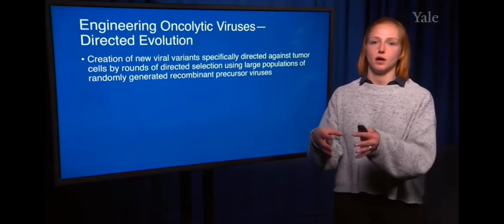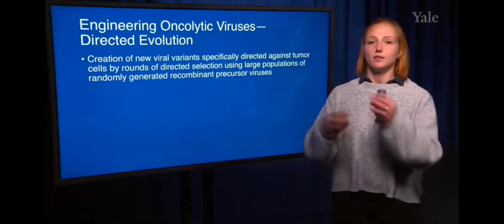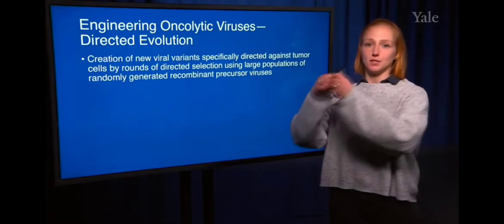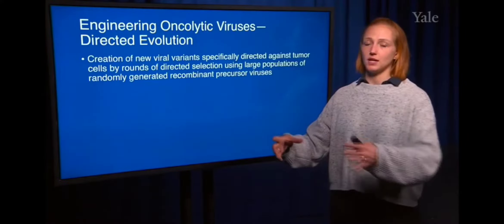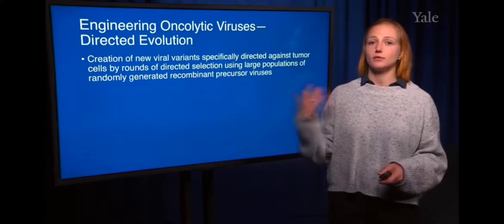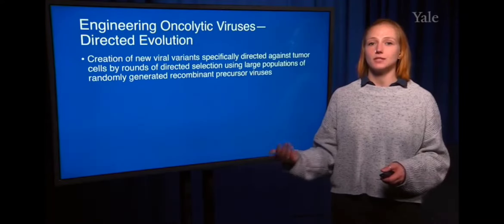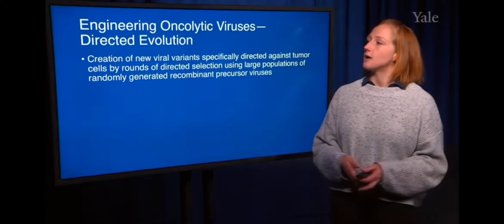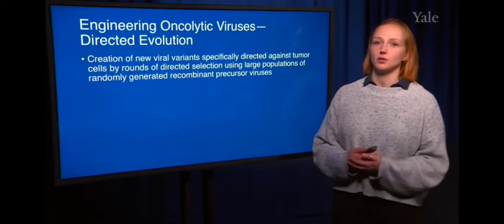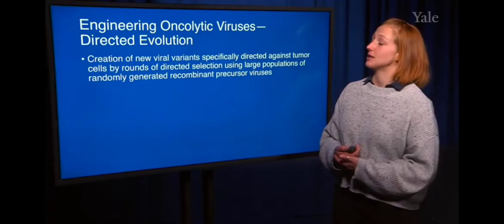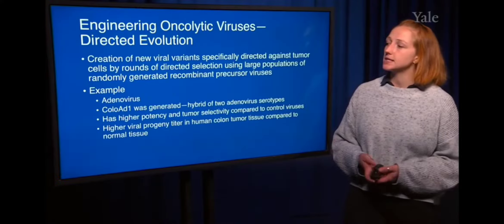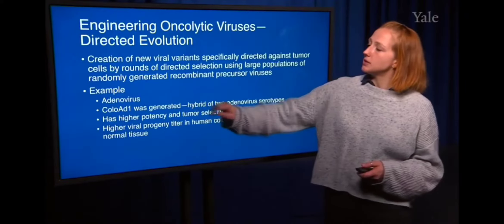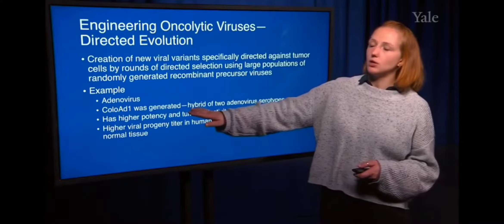You can take those viruses that were produced, put them into another plate of cancer cells, and do this for many, many rounds so that you select the most highly efficient virus capable of killing cancer cells. An example of this was an adenovirus used to create what was called the colo-AD1 oncolytic virus.